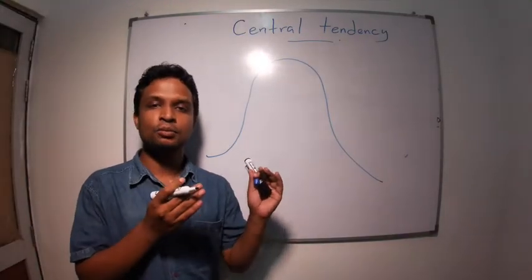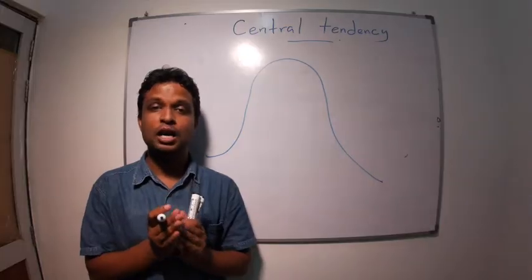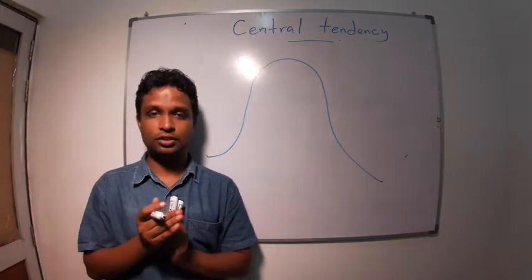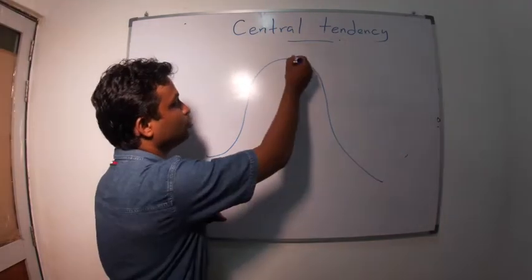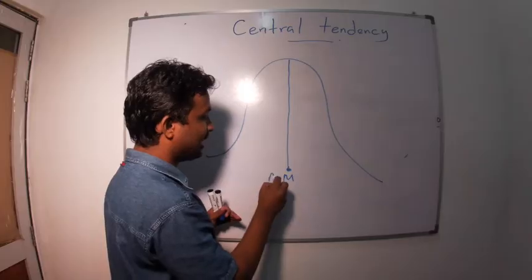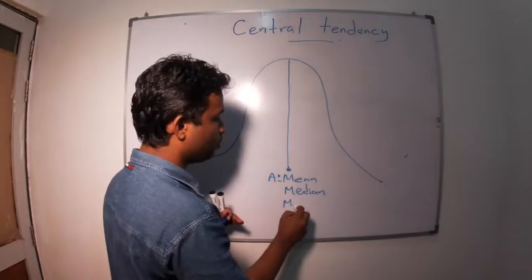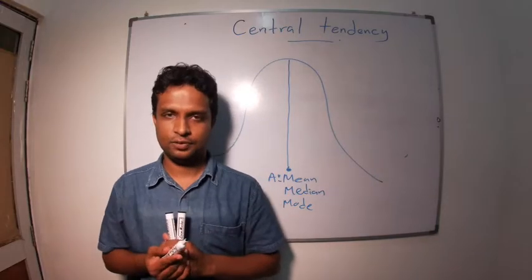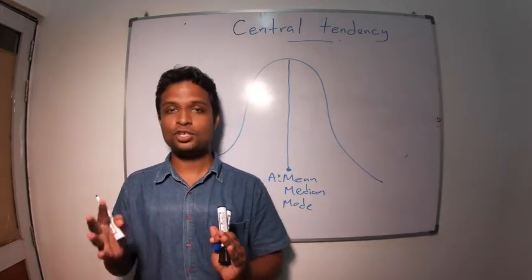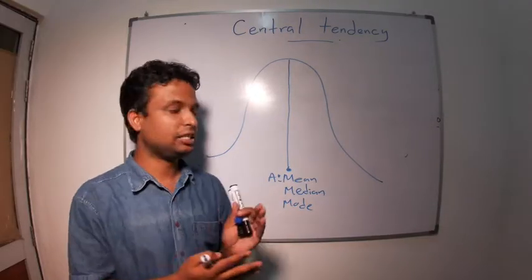This is a normal distribution. I discussed a little bit about normal distribution, but I'm going to discuss normal distribution in the next few lectures. In a normal distribution, usually mean - that is arithmetic mean - median, and mode are at the center. After plotting the variable, if we have the shape of normal distribution, the best measure of central tendency is mean. Generally, we go with mean.